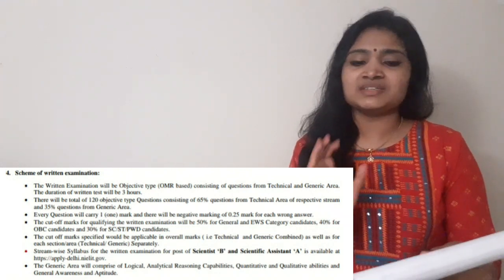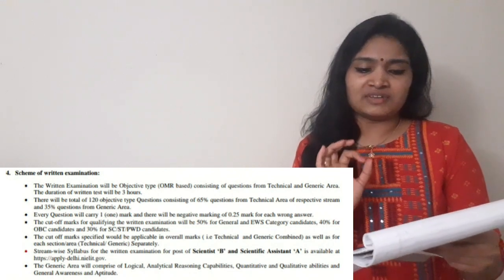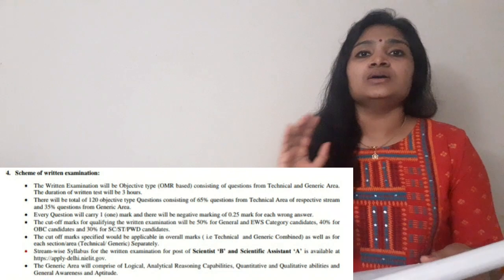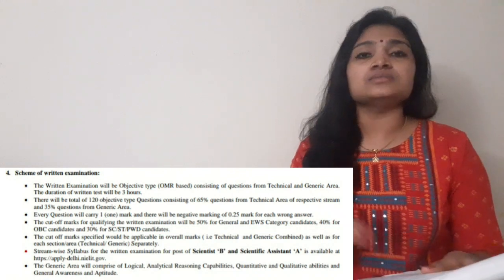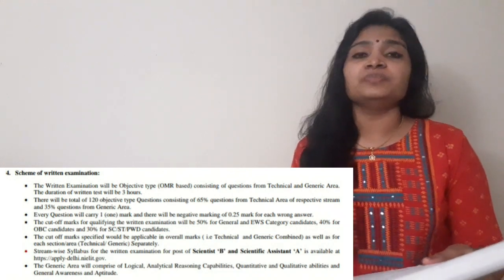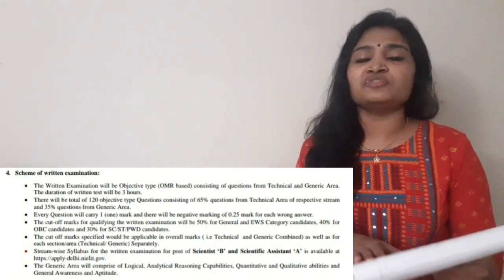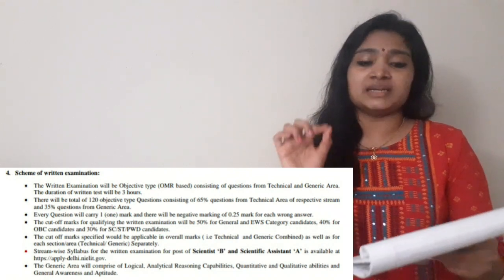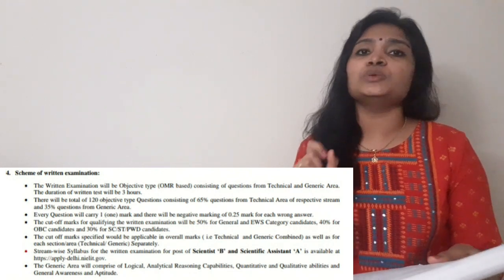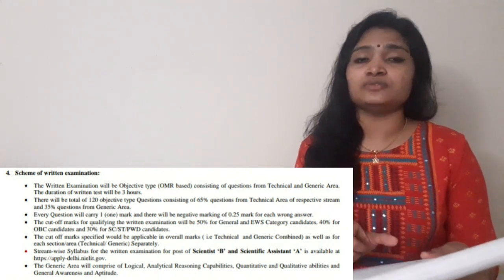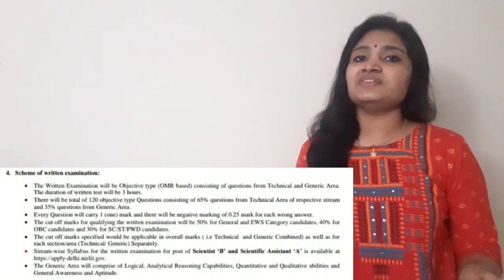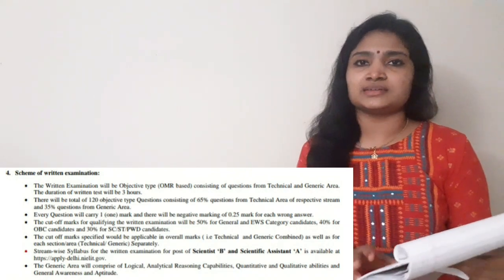The marking scheme is as follows: for every correct answer you get one mark, so total marks is 120. There is also negative marking — minus 0.25 marks will be deducted for every wrong answer.